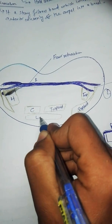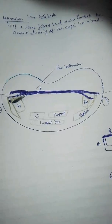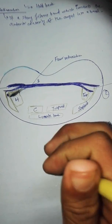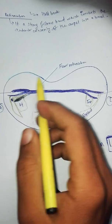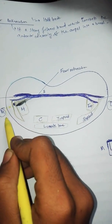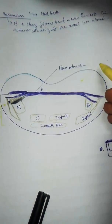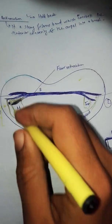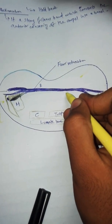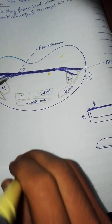This is the lunate bone. Now we will discuss the structures that are superficial and deep to the flexor retinaculum. This is the deep portion of the flexor retinaculum and this is the superficial portion.